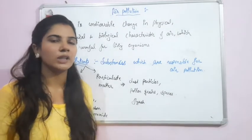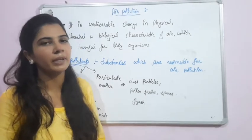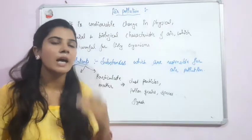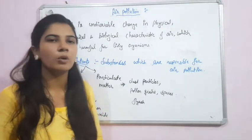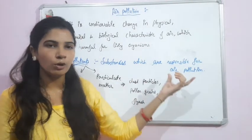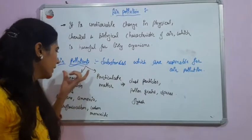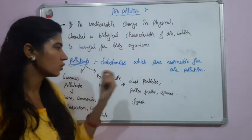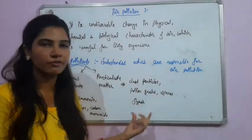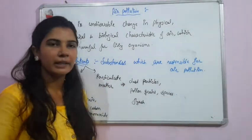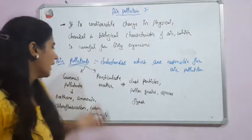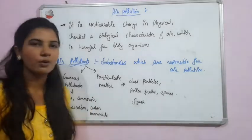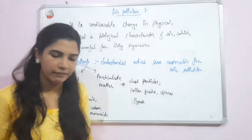So, air pollution means any undesirable change in physical, chemical and biological characteristics of air which is harmful for living organisms. Air pollutants can be gaseous pollutants like methane, ammonia, chlorofluorocarbon, carbon monoxide, or particulate matter like dust particles, pollen grains, spores, and fibres.